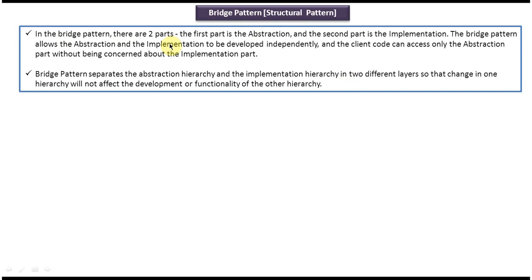In the bridge pattern there are two parts. The first part is abstraction and the second part is implementation. The bridge pattern allows the abstraction and implementation to be developed independently, and the client code can access only the abstraction part without being concerned about the implementation part.